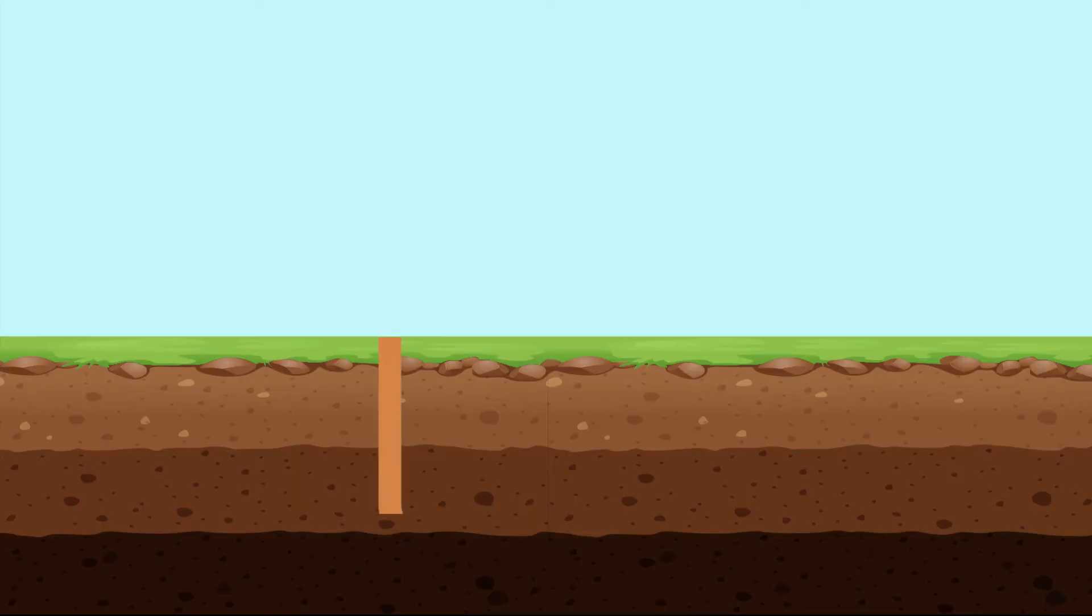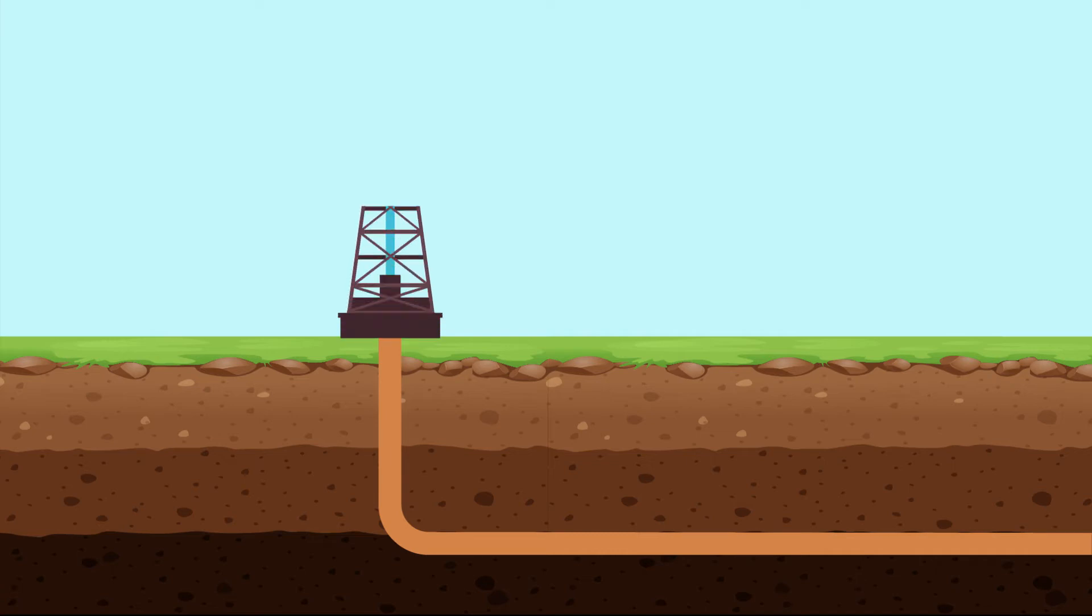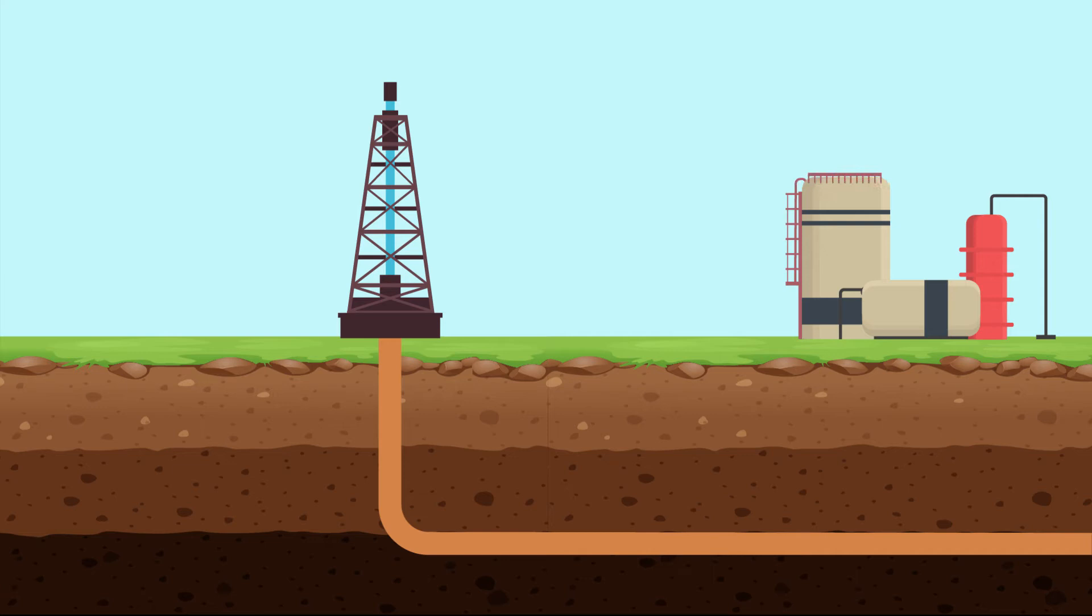Before that can happen, a well must first be made. A hole is drilled thousands of feet underground where natural gas and or oil is trapped. This process is usually done using horizontal drilling, which allows for this drilling to be done at an angle instead of just vertically. Horizontal drilling creates more contact on the rock formation, meaning more gas and oil can be extracted.